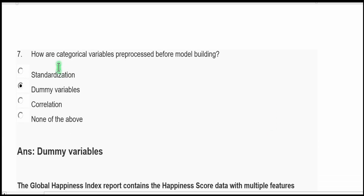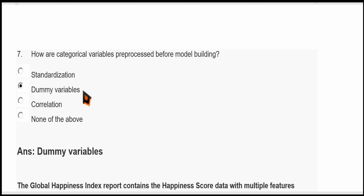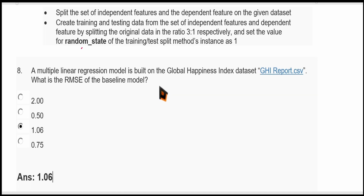Question seven: how are categorical variables preprocessed before model building? Categorical values are strings and may not be processed directly. To represent categorical values, dummy variables are created. So the correct answer is dummy variables.